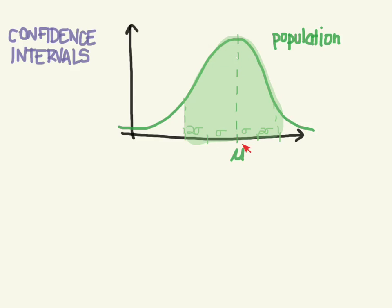It has a population parameter mean of mu, and it has a standard deviation here of sigma. And we know that approximately two standard deviations away from the mean on either side encompasses 95% of all the values.